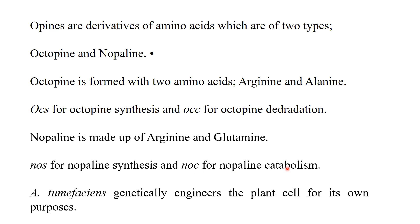Agrobacterium genetically engineers the plant cells for its own purpose. The major purpose is to attack plants and produce its own nutrients by using the opine genes.